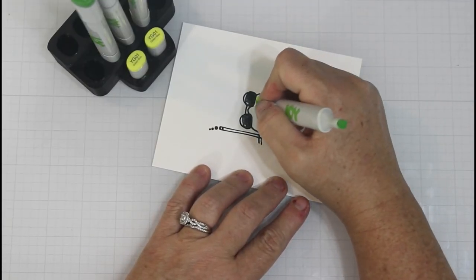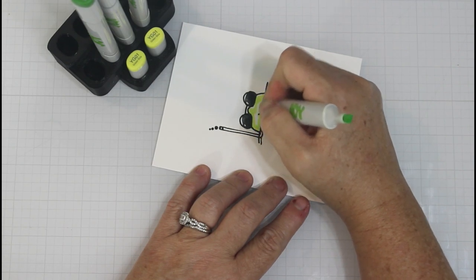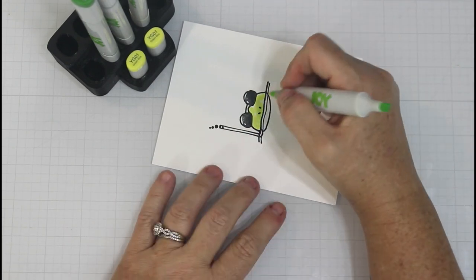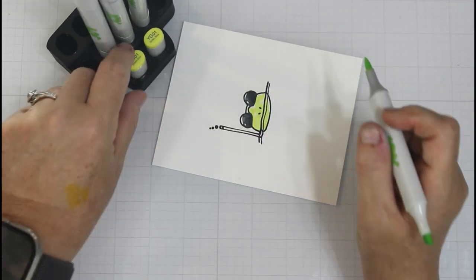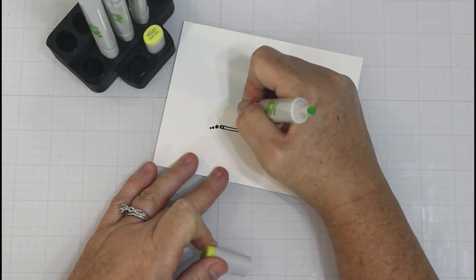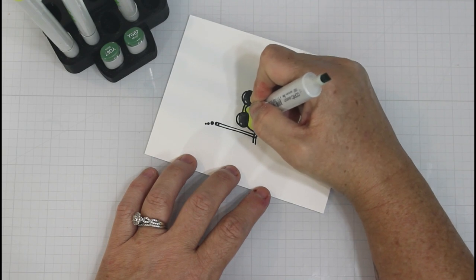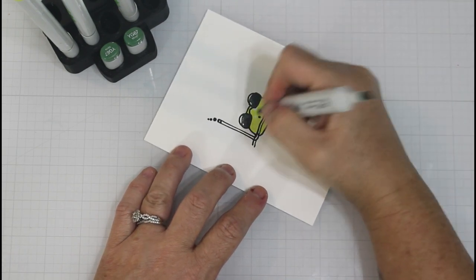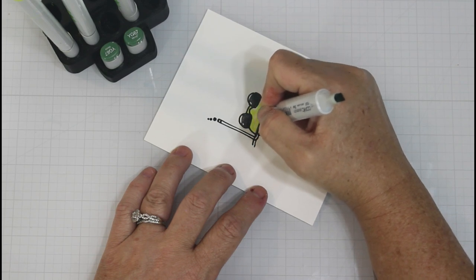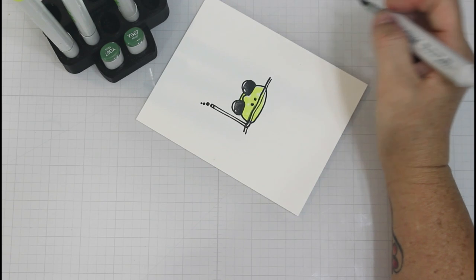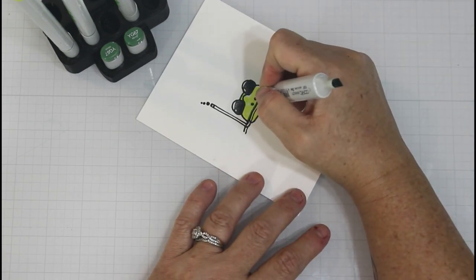So I decided to Copic Color those of course. I start out by priming my paper with my YG01. Just so you know, all of the products for Whimsy Stamps will be listed in the description box below if you're interested in making this card. Now I am moving on to my darkest color which is my YG67. I am making sure to put that underneath the eyes and along that upper lip because I am pretending that that lip is kind of curling over, kind of like a frog's mouth.